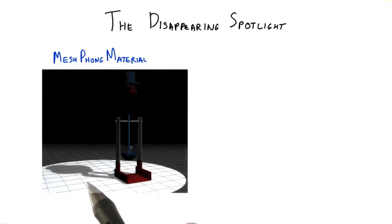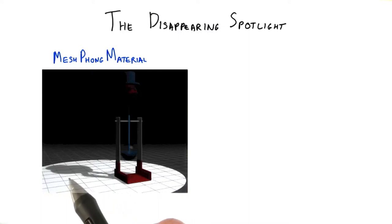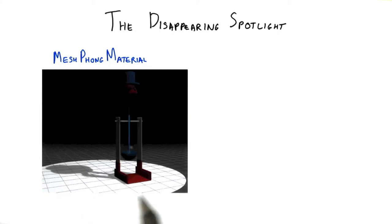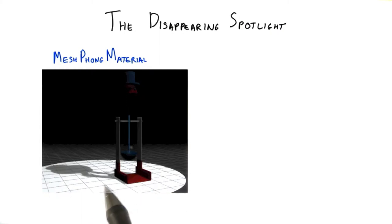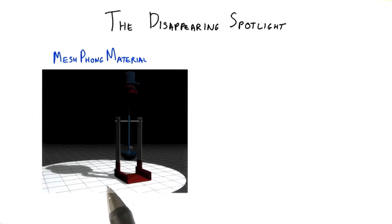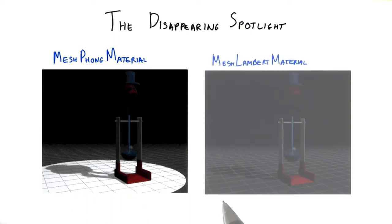Remember the spotlight and shadow exercise? If you look at the code, you'll notice a MeshPhong material is used for the ground plane. This material is something we normally need for specular highlights. However, the ground plane is not shiny, so say we change this material to MeshLambert material.